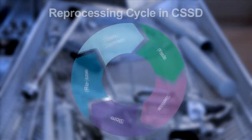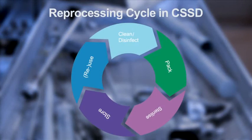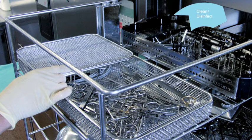The reprocessing cycle basically consists of five steps. It starts with the instruments being used in the OR and subsequently transported to the CSSD for appropriate decontamination, cleaning and disinfection.